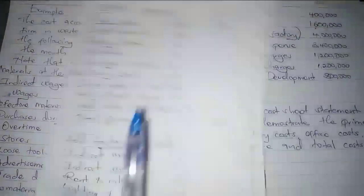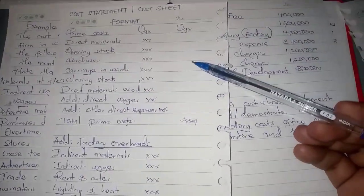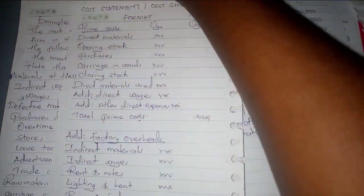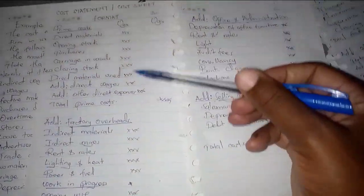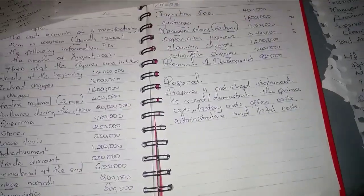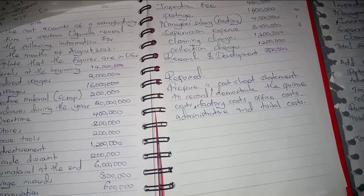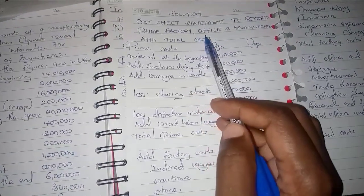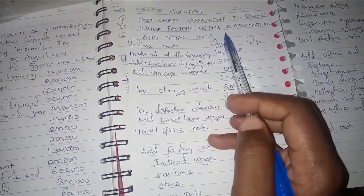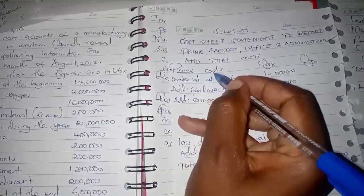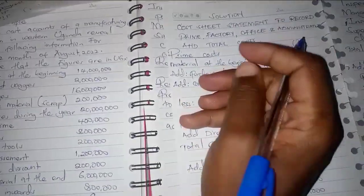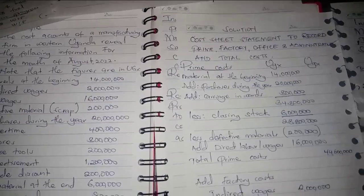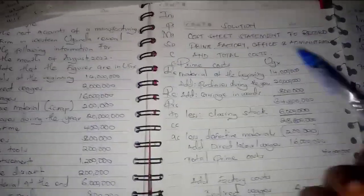This is our formatting for the cost statement or the cost sheet. We are going to prepare it one by one. The cost sheet statement will record the prime costs, factory costs, office and administration costs, and the total costs. So we start with the prime costs — we are going to identify which prime costs were given in the question.